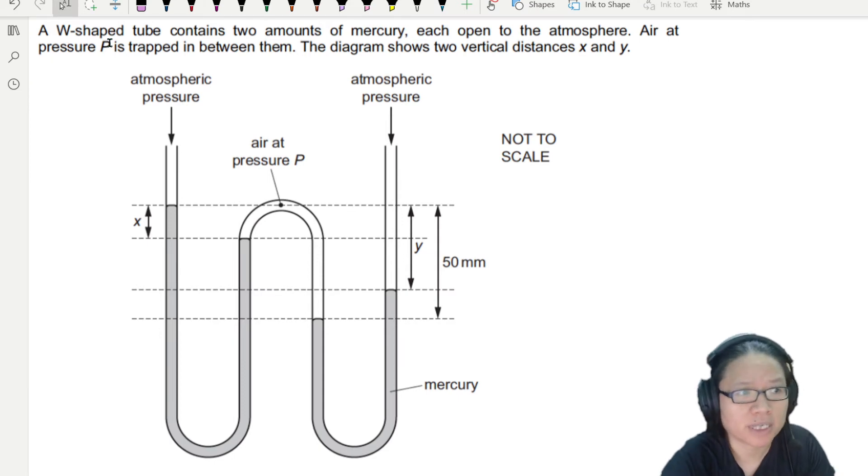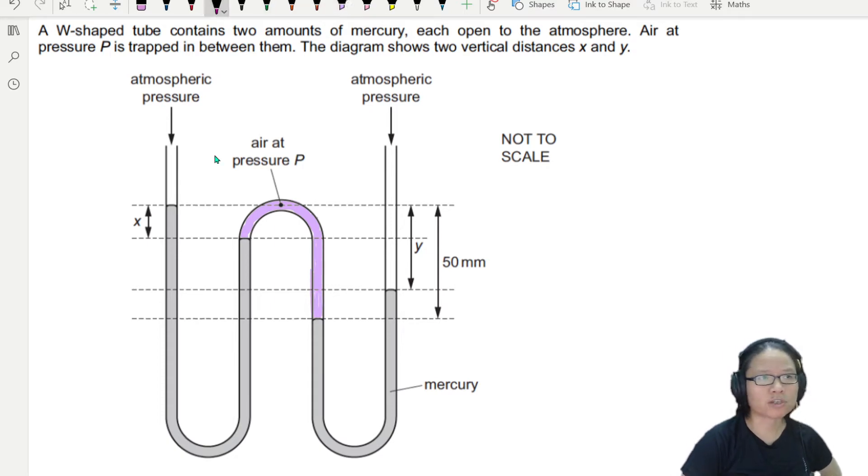The air at pressure P is trapped in between them. So we are saying that inside here is a sealed compartment with the air of pressure P. So what would be obvious would be at this point, the pressure here is the pressure of gas P, just like the pressure pressing down here is P, due to gas P. Air at pressure P.